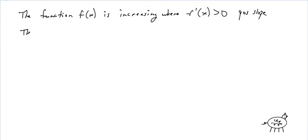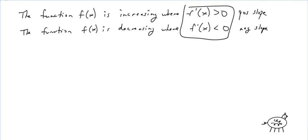And same thing. The function f(x) is decreasing where f'(x) is less than 0. And, again, this is a negative slope. Okay, pretty easy. But this is huge right here. You've got to remember that. It's very important.